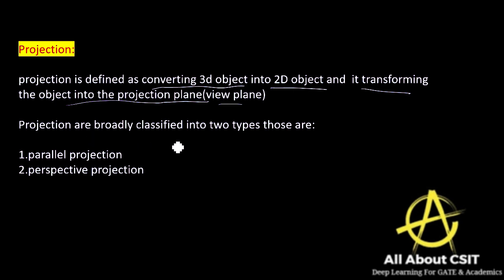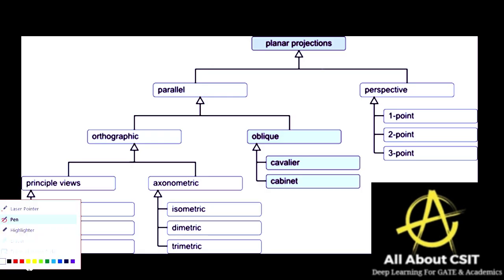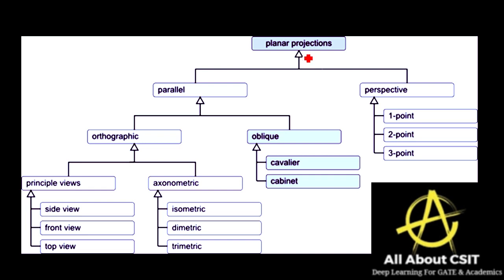Projections are broadly classified into two types: parallel projection and perspective projection. Looking at this flowchart, projection is divided into parallel projection and perspective projection.